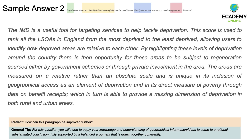Sample answer two: 'The IMD is a useful tool for targeting services to help tackle deprivation.' A correct statement. 'This score is used to rank all the LSOAs in England from the most deprived, allowing users to identify how deprived areas are relative to each other.' This is a good sentence — the student identifies that LSOAs are ranked and notes they are measured relative to each other, which is a very important aspect of how valuable the index of multiple deprivation is. The candidate then develops the point by noting that highlighting these levels of deprivation creates opportunity for areas to be subject to regeneration through government schemes or private investment.